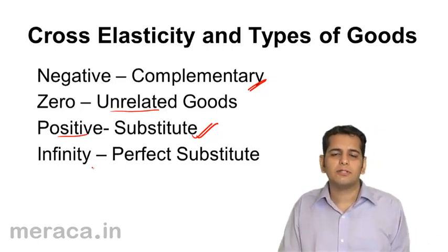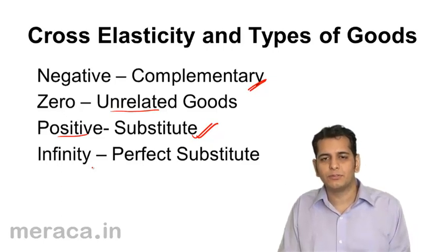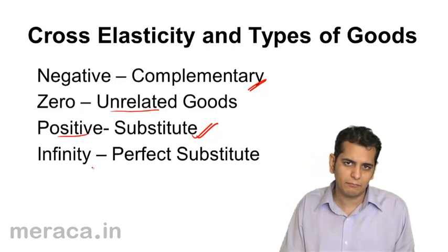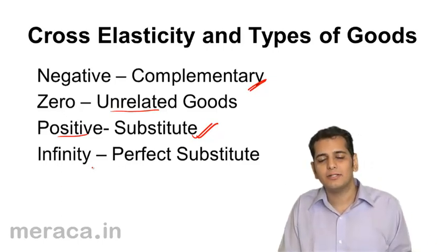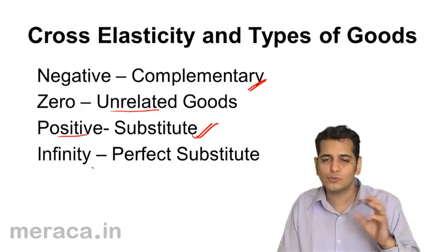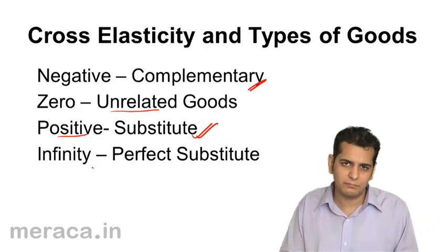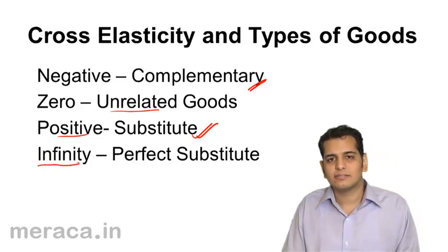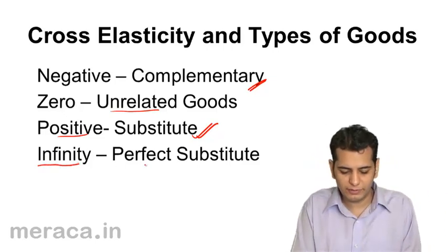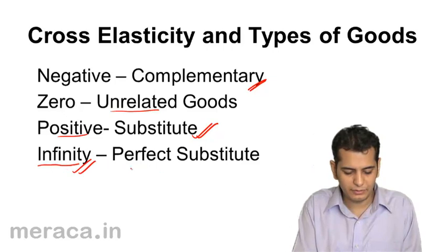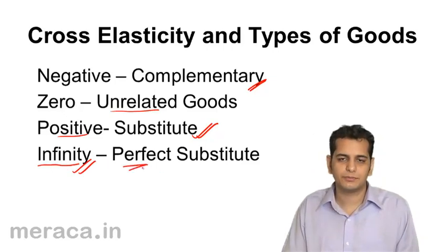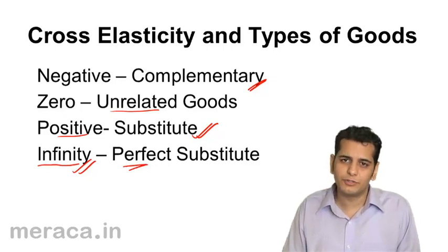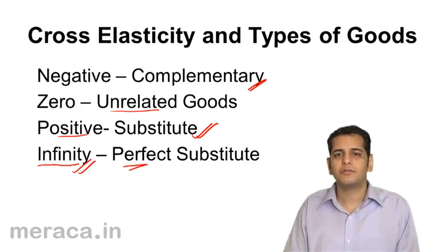This is only possible in case of a perfect substitute, where one good is a perfect substitute of the other. It doesn't matter if the price changes or not — people may choose to consume either of them. So the cross elasticity in case of perfect substitutes will always be infinity. This brings us to the end of the topic: elasticity of demand.